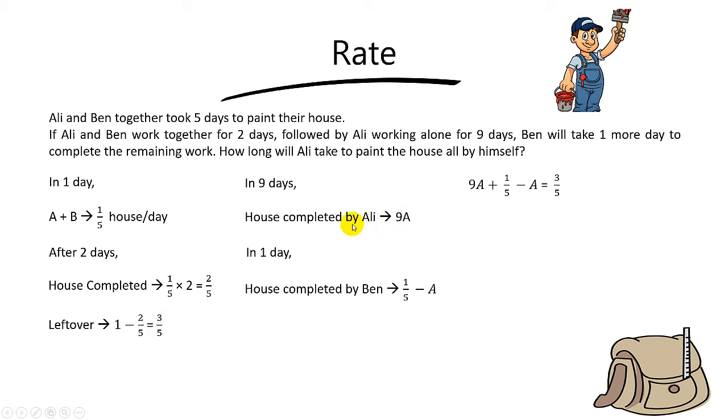Plus, 1 out of 5 minus A, which is the house completed by Ben in the 1 day. And we will take this add together, you will get the leftover which is 3 out of 5.